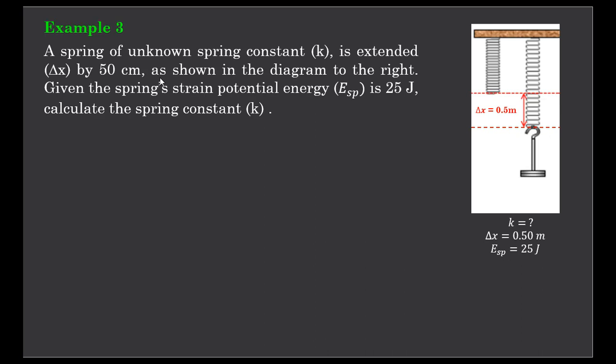Our final example, example three. We've now got a spring of unknown spring constant k, it's been extended by 50 centimeters, and the strain potential energy stored in that spring is 25 joules. We want to work out what is the spring constant k.